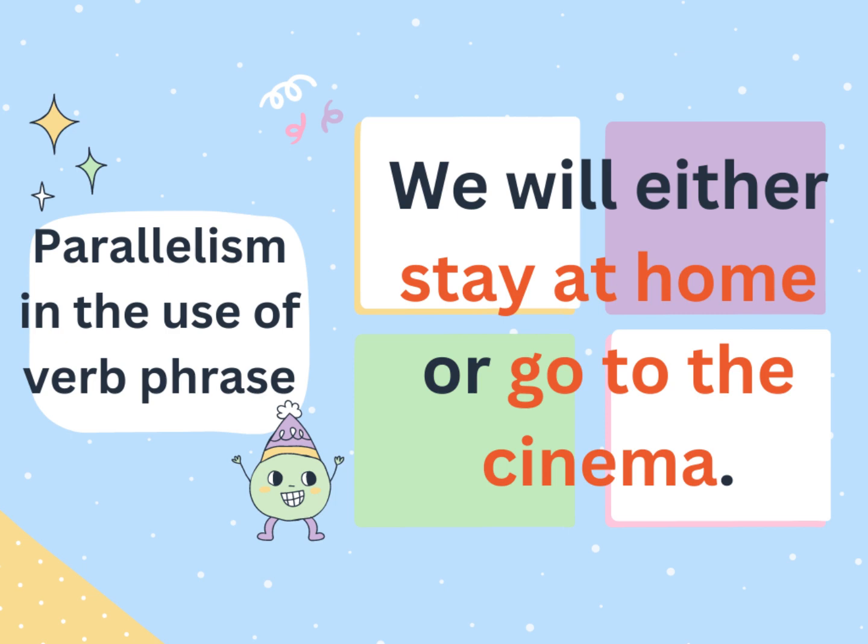Parallelism in the use of verb phrases. Example sentence: We will either stay at home or go to the cinema. Stay at home and go to the cinema are all verb phrases. Therefore, this sentence has parallelism.